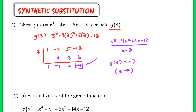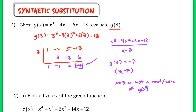To tie it into the vocabulary terms, this also tells us that x equals 3 is not a root — or in other words, a zero — of the function g of x. It's not a root or zero of g of x because if it were, the remainder should be 0 here instead of a different value. So that's important, and we're going to use that idea now when we start graphing our function.